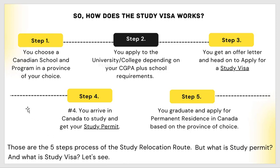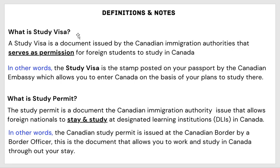Let's clarify study visa versus study permit. A study visa is the document issued by the Canadian immigration authority that serves as permission for foreign students to study in Canada — it is a stamp on your passport by the Canadian embassy allowing you to enter Canada to study. A study permit is the document the Canadian immigration authority issues to you at the border, allowing you to stay and study in any institution in Canada throughout your stay.